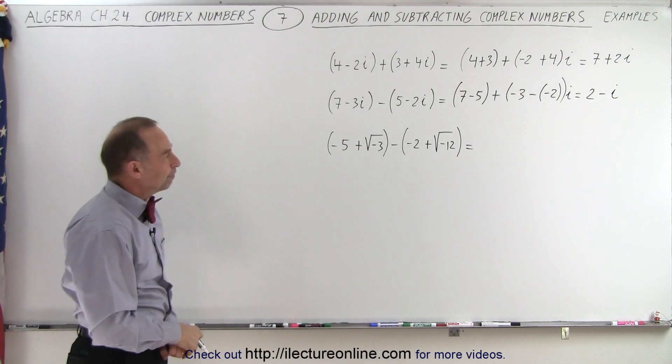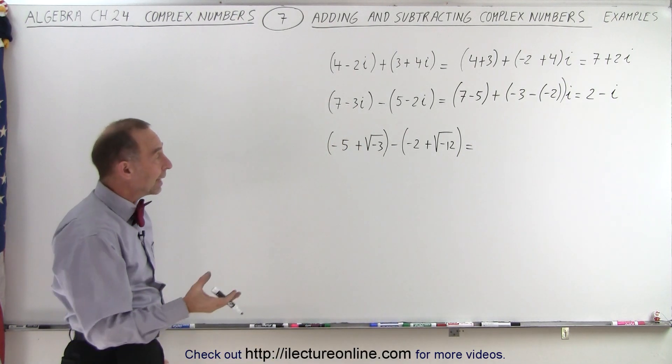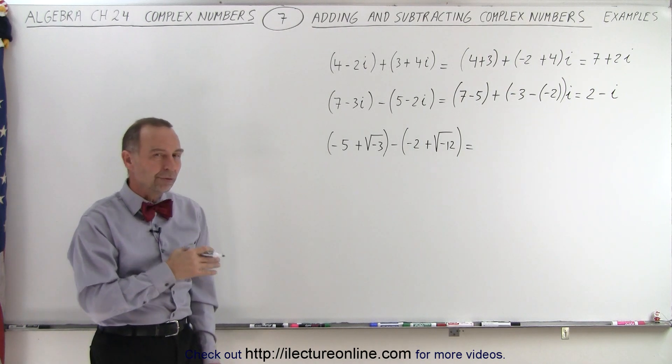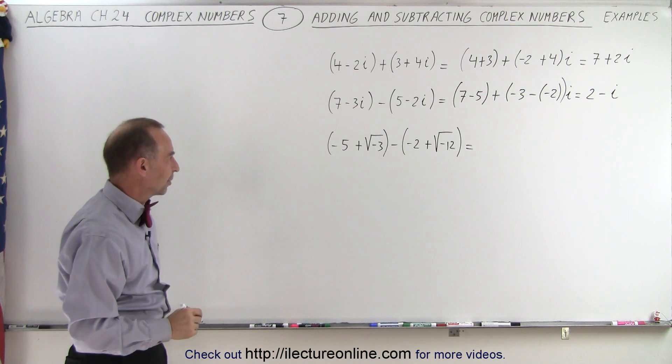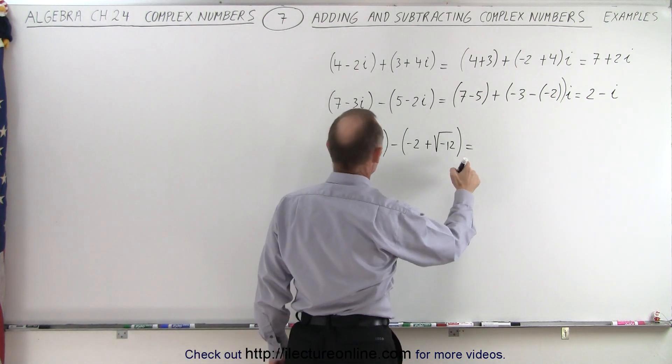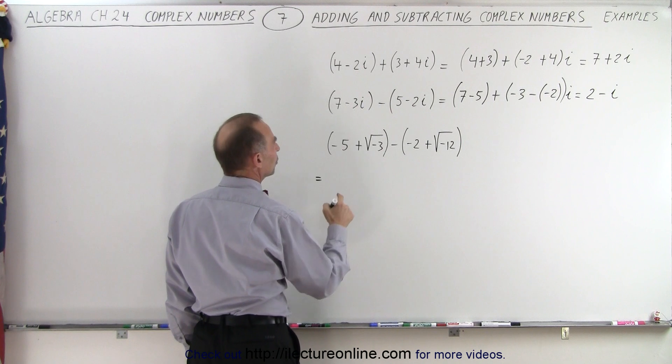How about the third example? Well, that one is a little bit more complicated because we first have to change the square root of negative numbers to the imaginary number including the letter i. So let's do that. So this can be written, let me just do it over here. This is equal to,